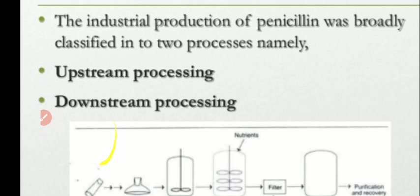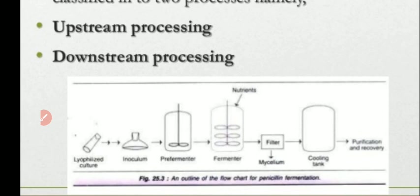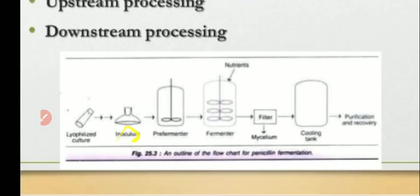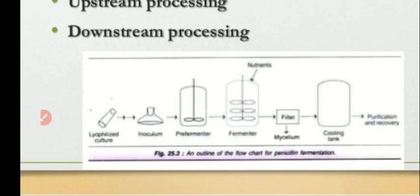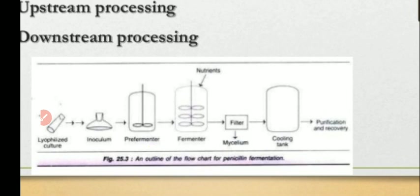The culture of Penicillium chrysogenum is preserved in lyophilized form. First we carry out inoculum development, producing a large-scale seed culture. This seed culture is added to the pre-fermenter, and then to the main fermenter, which contains nutrients including carbon source, nitrogen source, and other minerals required for growth. Proper aeration and agitation are provided and fermentation runs for approximately seven days.